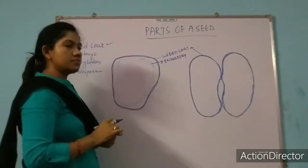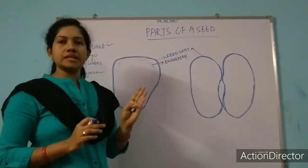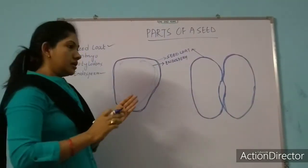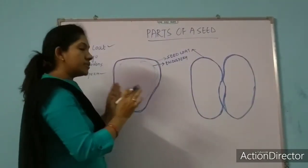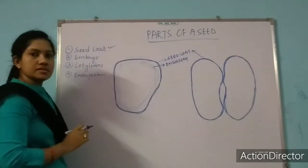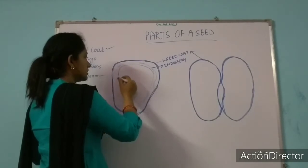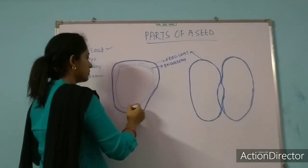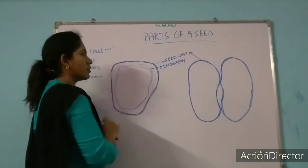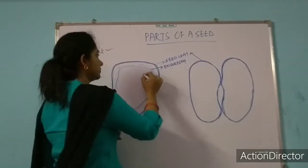Endosperm is visible and distinct in monocot seeds, whereas it is not clearly distinct in dicot seeds. After endosperm, we have cotyledons. This full part — here in the monocot and here in the dicot — we call cotyledon.